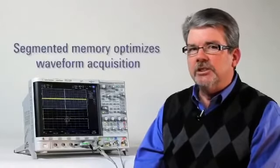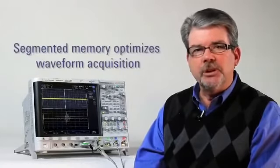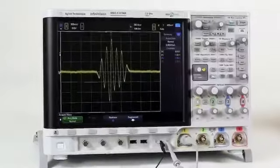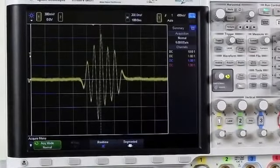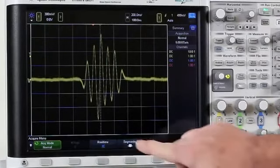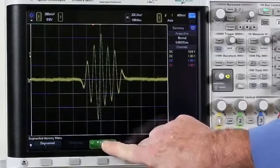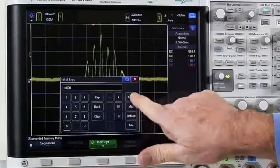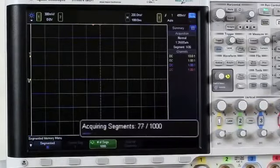But a better solution is to use this scope's segmented memory acquisition mode. With the scope's time-base rescaled again for optimum resolution, let's now use this scope's segmented memory acquisition mode to capture 1,000 consecutive occurrences of this burst.